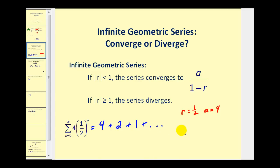The sum is equal to the first term, four, divided by one minus one-half. Four divided by one-half equals eight.